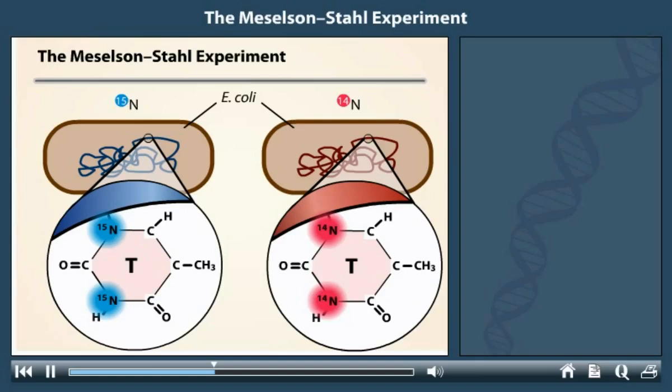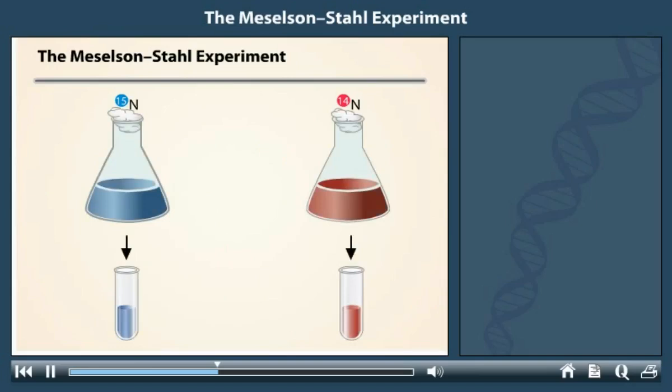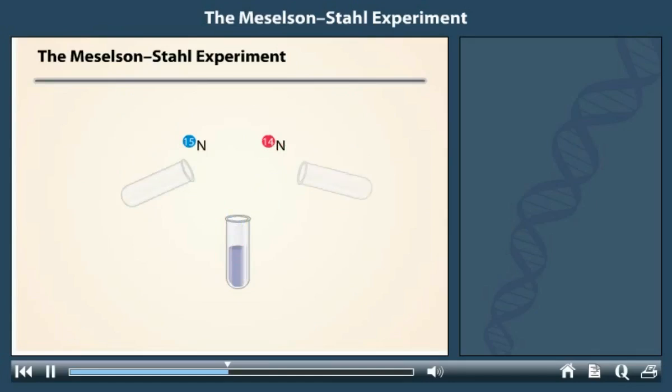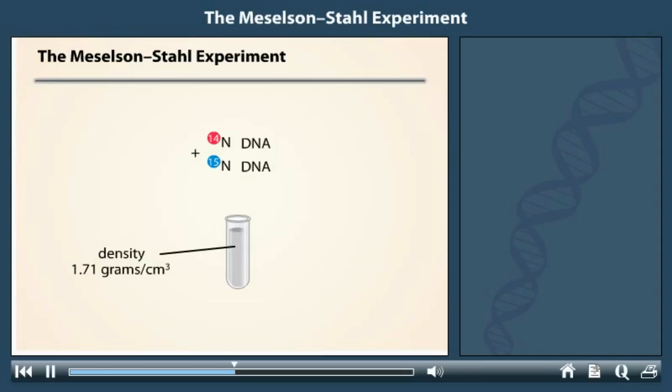The scientists took samples of each bacterial culture. They processed the bacteria to release the DNA into solution. Equal volumes of the DNA solutions were mixed together, and then this solution was mixed with a concentrated solution of the salt, caesium chloride. The density of the caesium chloride was 1.71 grams per cubic centimeter, the same density as DNA.